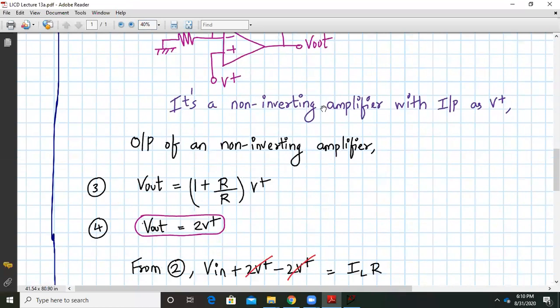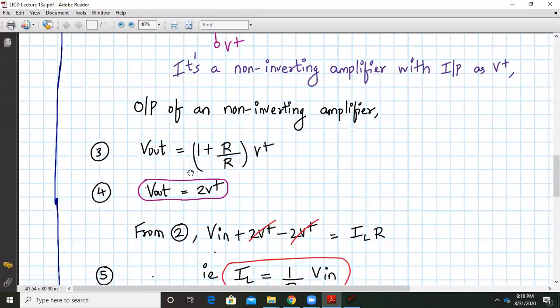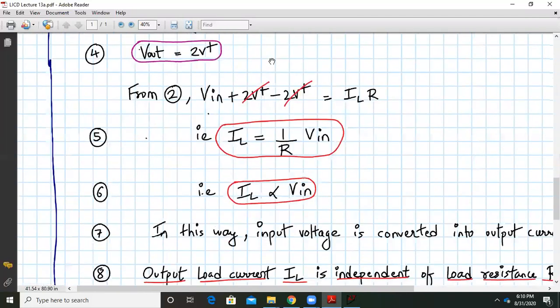The output of non-inverting amplifier is given by V out equal to twice V plus. Remember step number two. We have V in plus V out minus twice V plus is equal to R into IL. Here V out, we substitute it as twice V plus. When we do that, twice V plus will get cancelled out and we are left out with V in is equal to IL into R. That is, we can write the same thing as IL is equal to 1 upon R times V in.